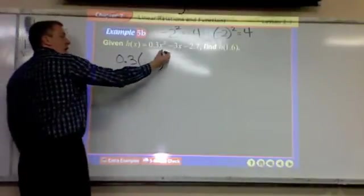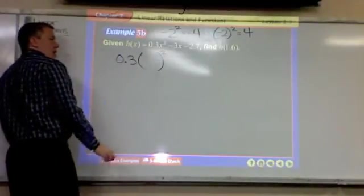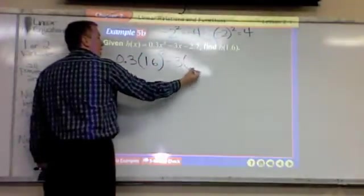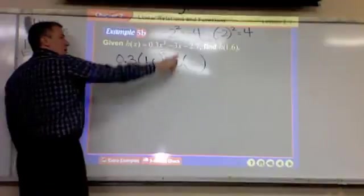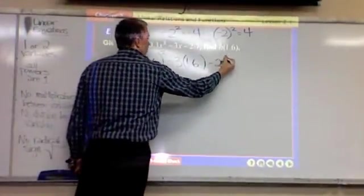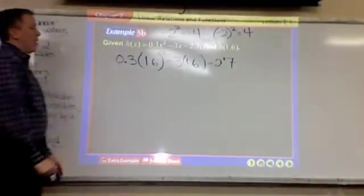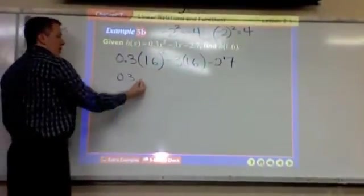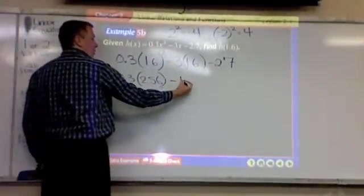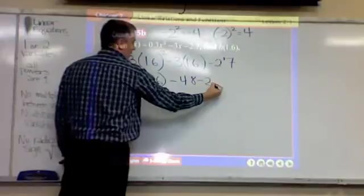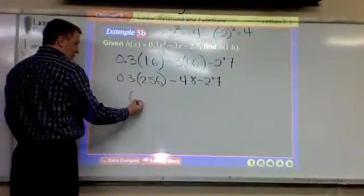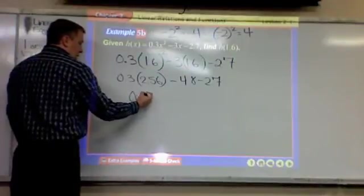So instead of x squared, what is in here? 1.6. 1.6 minus 3 times 3x. What's x? 1.6. 1.6 minus 2.7. So you could get your calculator out. 0.3 times 1.6 squared is 2.56 minus 4.8 minus 2.7. I'm just going to try to do this a little bit fast. Does anyone have their calculator out?